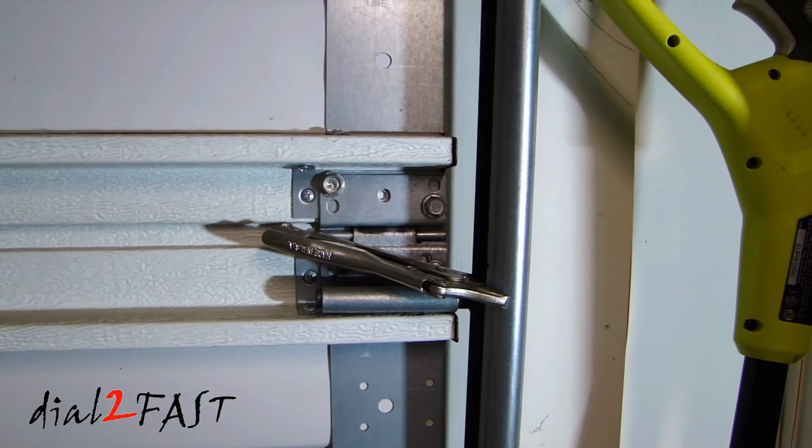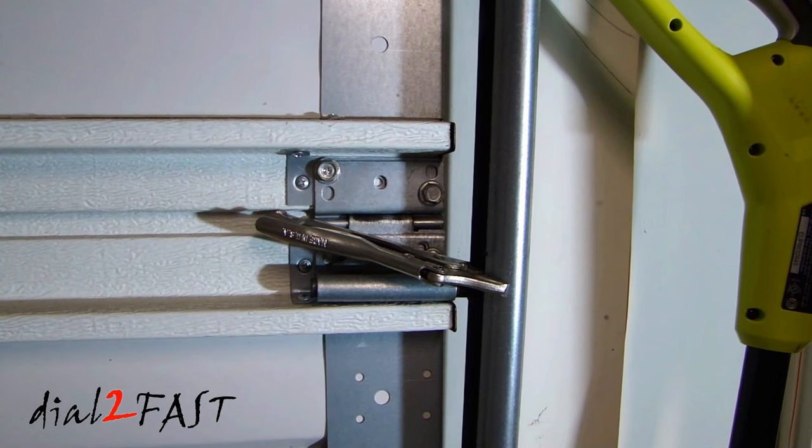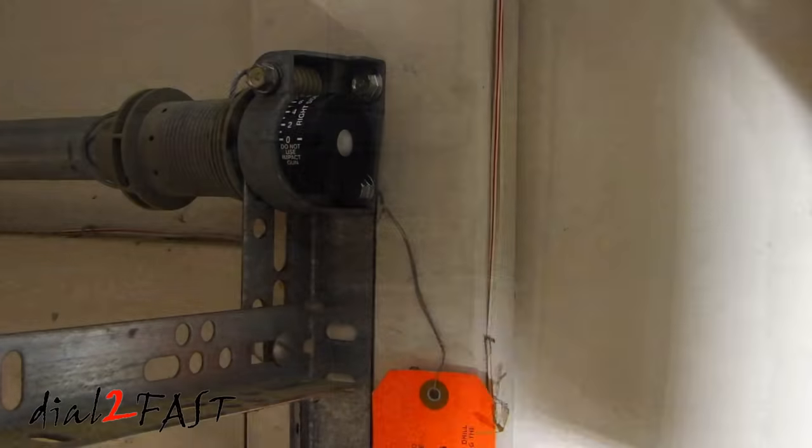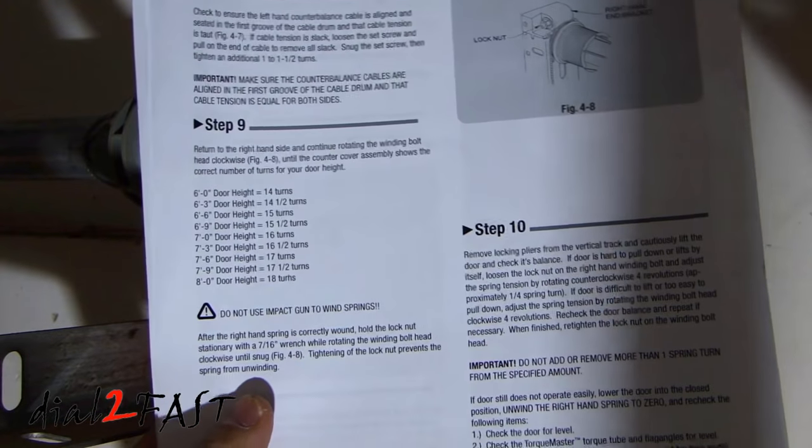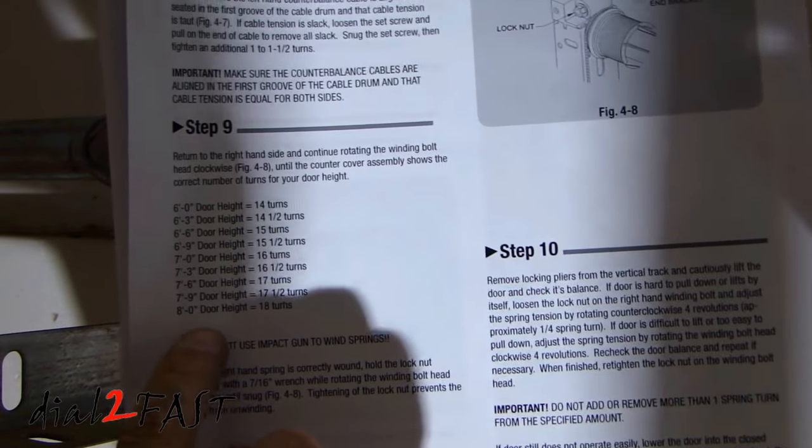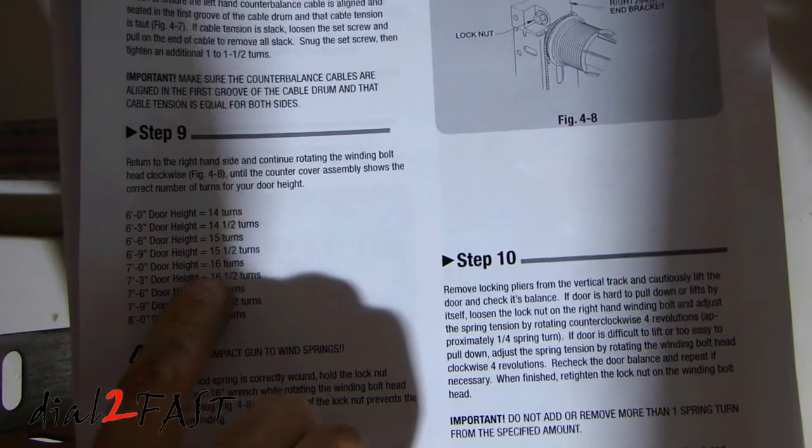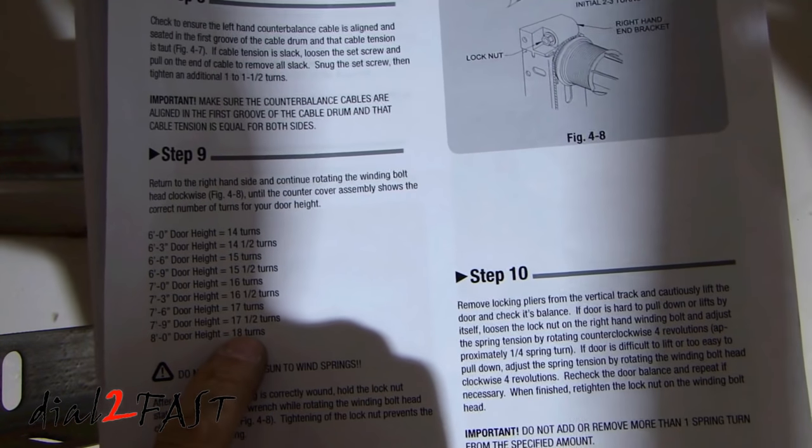Before you adjust the tension you should get locking pliers and clamp onto the rail where one of the rollers are. Now we can adjust the tension and refer to the install guide. There is actually a table here for the height of the door. This is the number of turns you want to have.